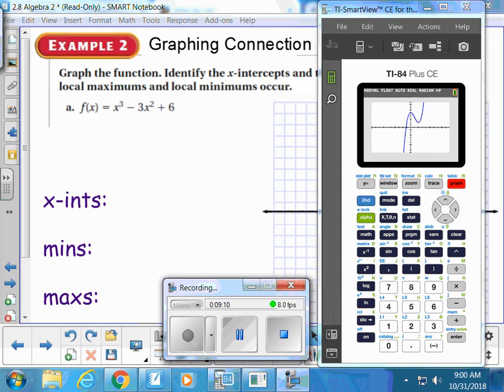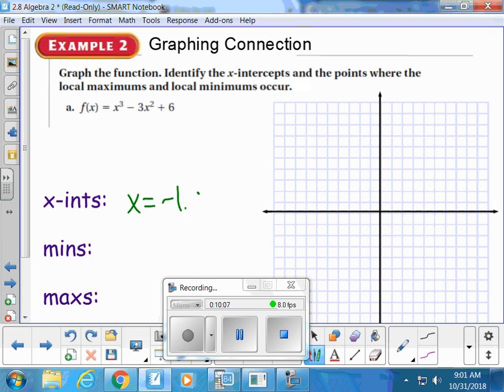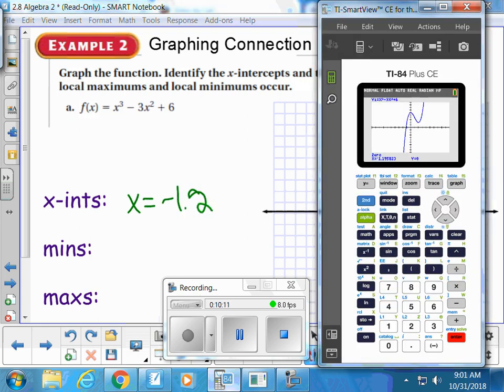I'm seeing two turning points, that makes sense because the degree is three. How many solutions are you seeing? Only one right there. It looks to me like it's maybe negative 1.1 or something. I'm not going to bother searching the table because I know in my calculate menu I can just calculate out that zero. I go second trace, number two. A good left bound would be negative two, what would be a good right bound? Zero. Enter one last time. That'll be my x-intercept, negative 1.195, so let's go negative 1.2.